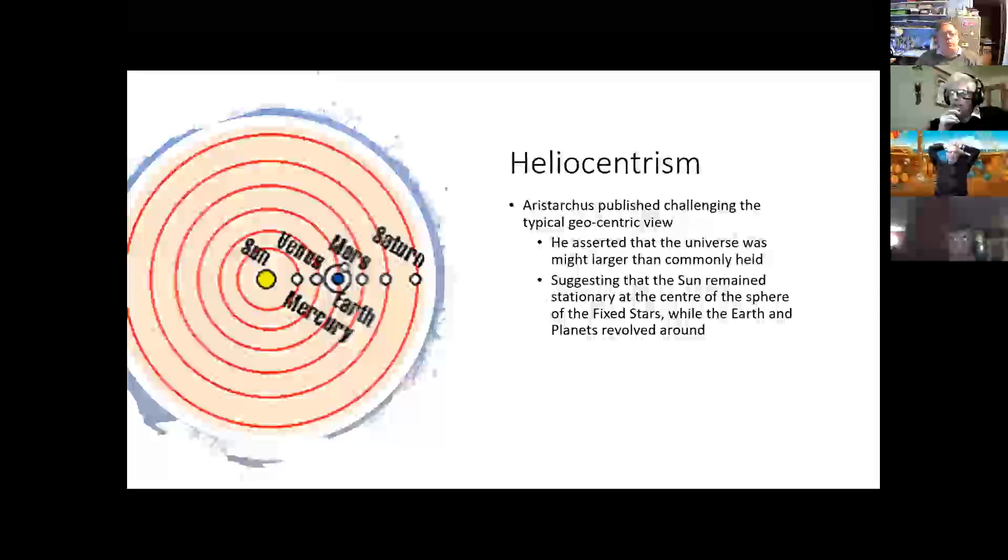But he also worked out that the universe must be much larger than people commonly believed. He had the idea that it didn't just stop just beyond Saturn's orbit, as shown here, and then have the fixed stars, but that the stars were actually much, much further away than the planets.